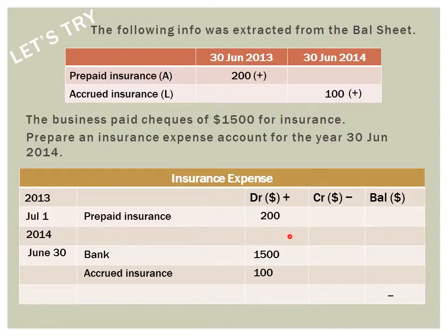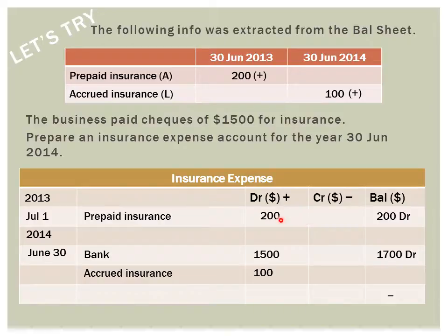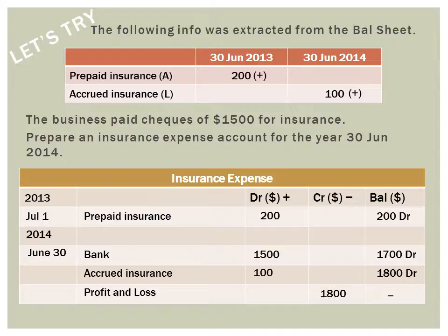Now let's do the running balance. Starting with 200 on the debit (plus) side, we continue to add: 200 plus 1,500 equals 1,700, still on the debit side. Then we add the accrued insurance to get 1,800, still on the debit side. The P&L figure is always on the negative side — you want to take out everything of the expense and transfer it to the profit and loss account — so we put 1,800 on the negative side, and that balances the account.